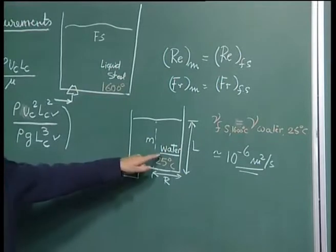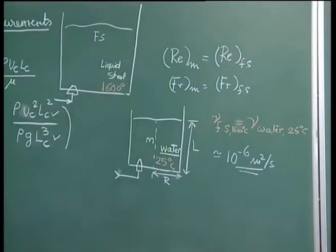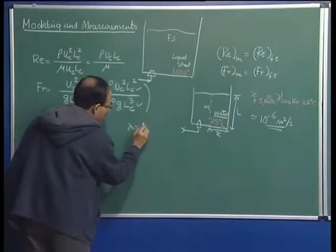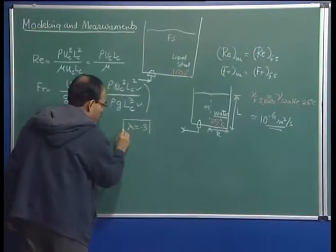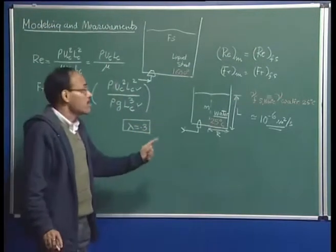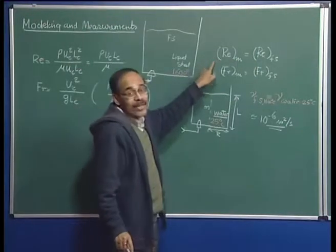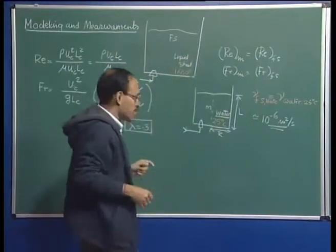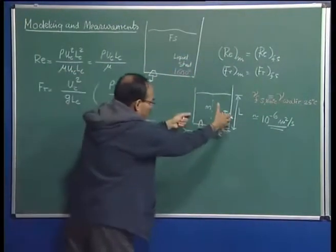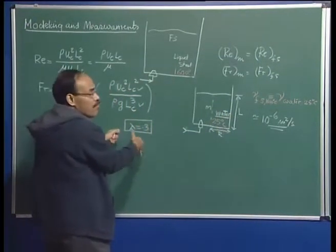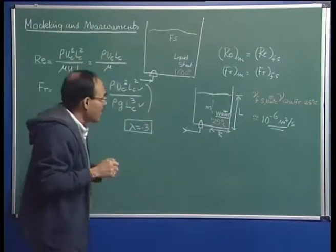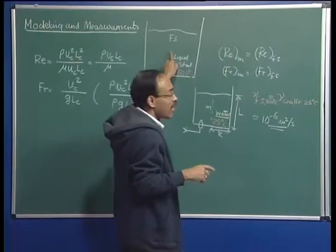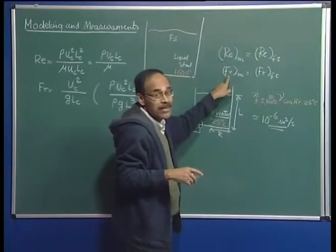So now, if we use water and construct a water model with a chosen scale factor — suppose λ = 0.3 — we have geometrically made the vessel similar to the full-scale system, scaled down by the chosen scale factor. Now I want to find out whether these systems can be made dynamically similar, so both the Reynolds equality and the Froude equality must be respected.